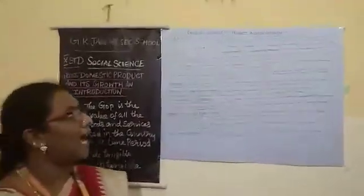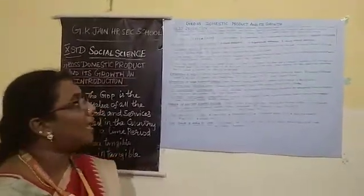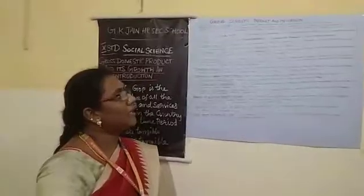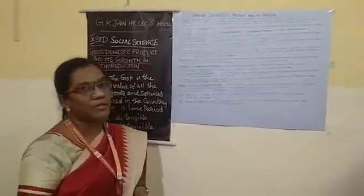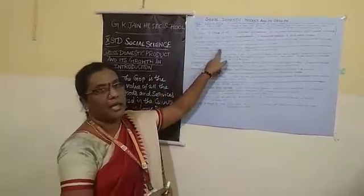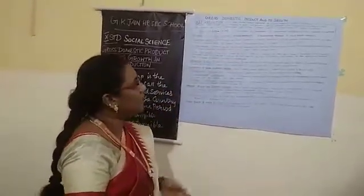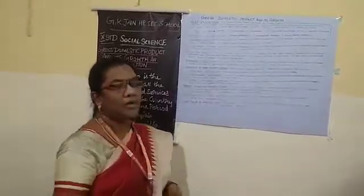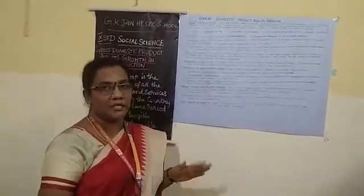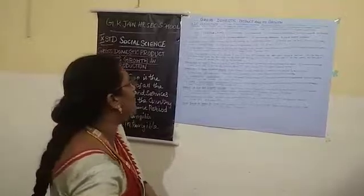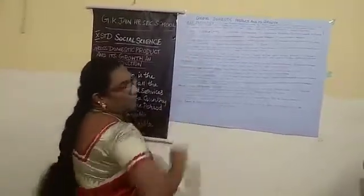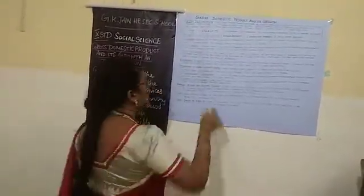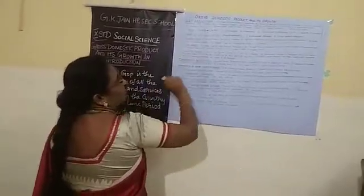The expenditure method: GDP is measured by adding the expenditure on all the final goods and services produced in the country during a specified period. The different types of expenditure are shown in the equation: Y equals C plus I plus G plus X minus M.